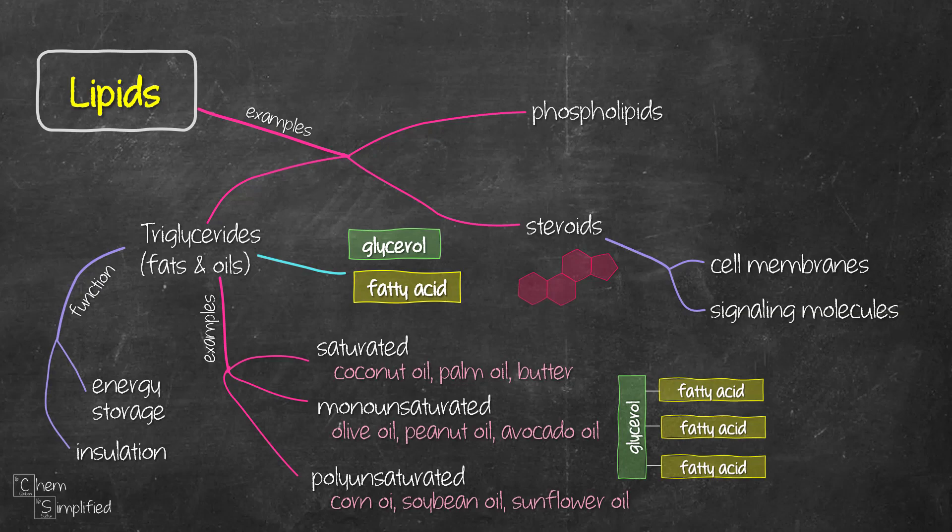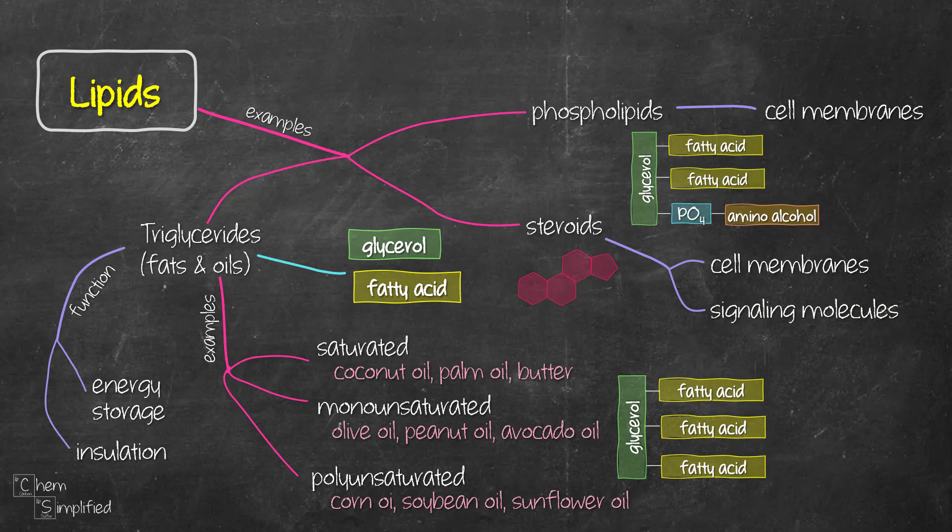Phospholipids are rather similar to triglycerides except it has a phosphate group with amino alcohol instead of having three fatty acids connected to the glycerol. It's a key component for cell membranes.